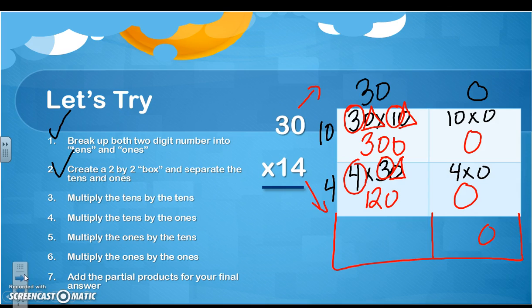So 0 and 0 is 0. So I have 420. So 420 plus 0 is 420. So my final answer is 420.